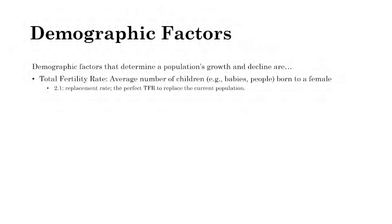A total fertility rate of 2.1 means the average number of children that a female has within a country is 2.1 children. It's an average, so it won't be exactly a whole number. Now, 2.1 is the replacement rate — the perfect TFR to replace the current population.